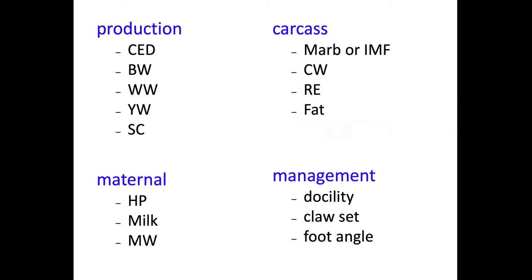There are a lot of different EPDs out there. All major breed associations have a core set plus additional EPDs. Common ones include calving ease direct — higher number means easier calving — birth weight (lower number means easier calving), weaning weight, yearling weight, and scrotal circumference, which are pretty common across all breeds.